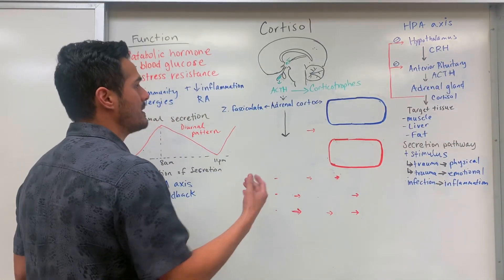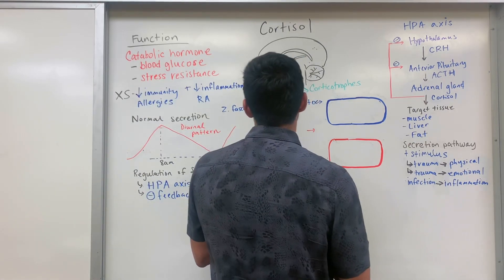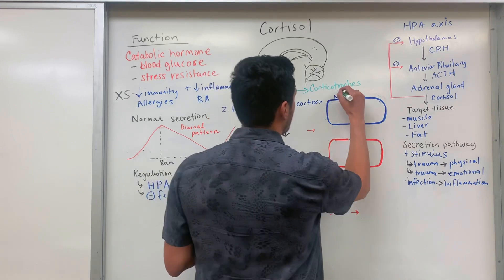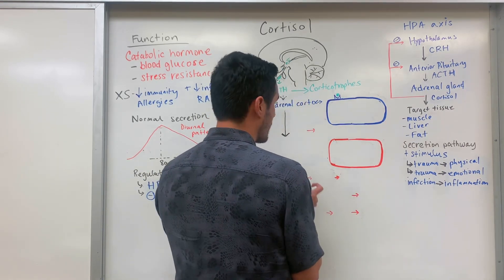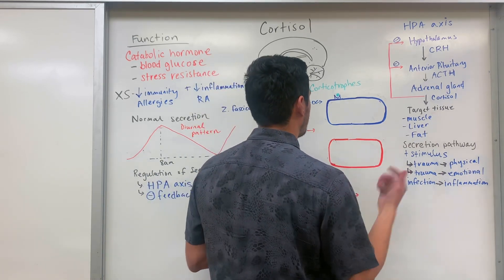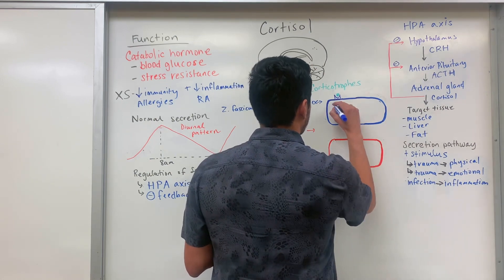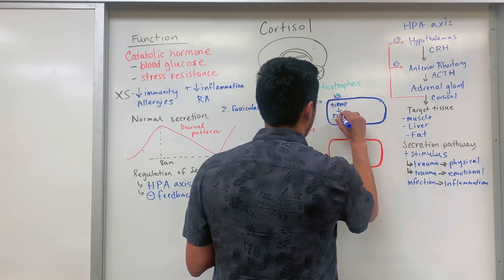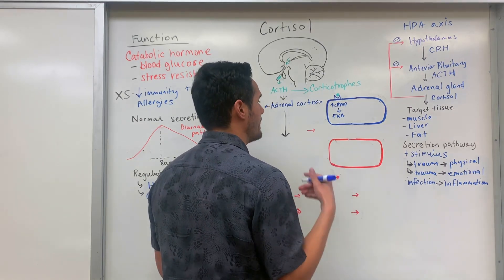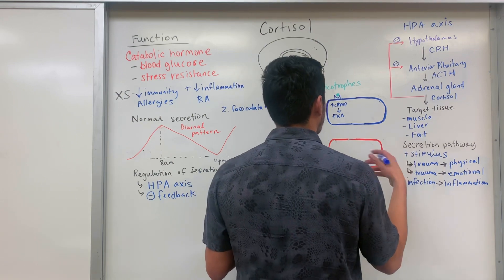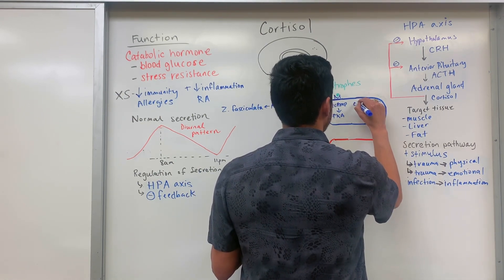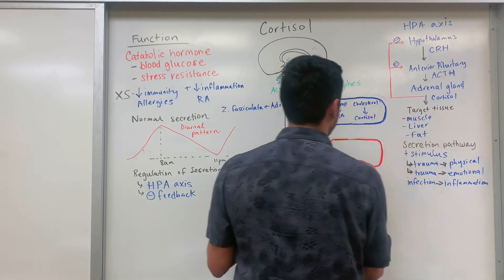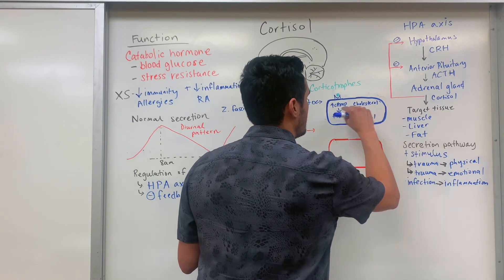Once ACTH binds to its receptor within the zona fasciculata — ACTH being a peptide or protein hormone — it will stimulate a pathway we're already familiar with. This will increase the levels of cyclic AMP, and as a result we'll activate protein kinase A. Kinases add phosphate groups to things, so we'll activate the enzymes necessary to synthesize cortisol from cholesterol. We'll add phosphate groups to these particular enzymes and then synthesize cortisol.